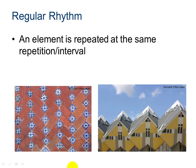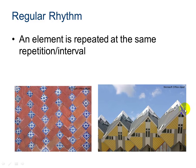Regular rhythm is when an element is repeated at the same repetition or interval. We can see that here in this example of a stone pathway, as we have a continuous pattern in each row of the tiles, and the blue tiles appear to be approximately the same distance apart. We also have regular rhythm here, not only with the shape of the roof line, but also with the pattern they've chosen to repeat on the front of each section of the building.